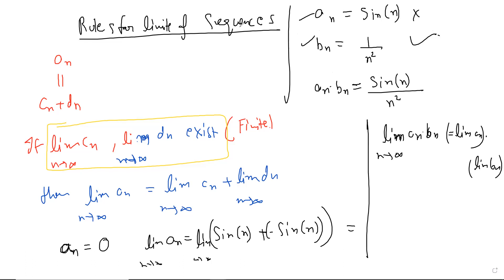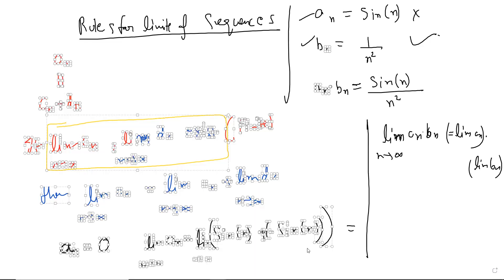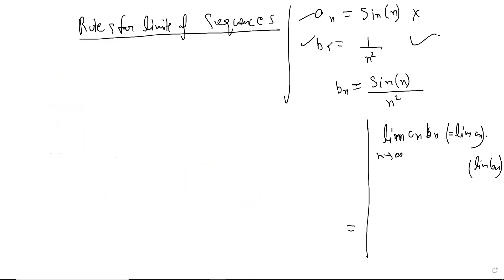For the addition rule: if you split a_n into c_n + d_n and both limits exist, the limit of a_n is the sum of those limits — regardless of how you split it. Different people may split differently, but they'll get the same answer. It's like saying 5 can be written as 1+4 or 2+3 — the sum is the same. The proof is deeper, but the idea is clear.